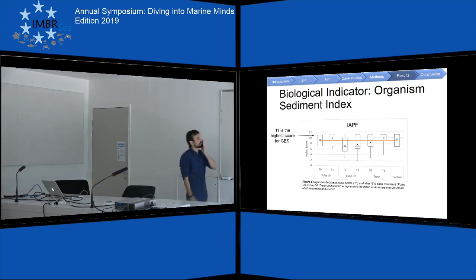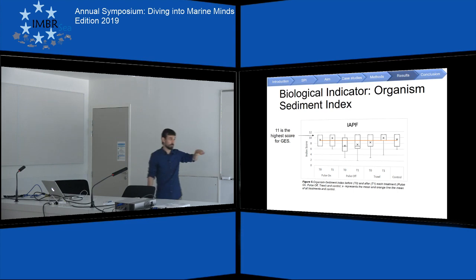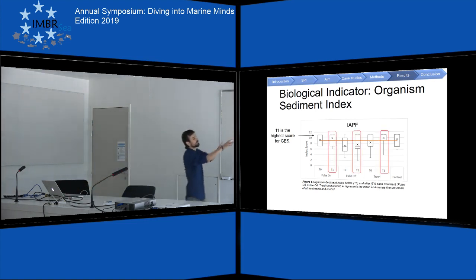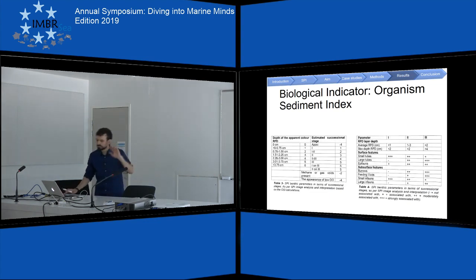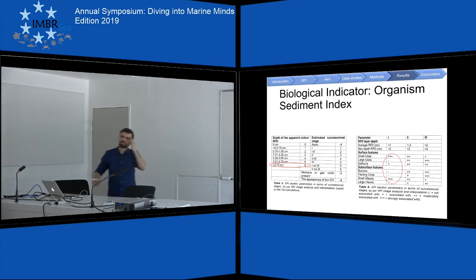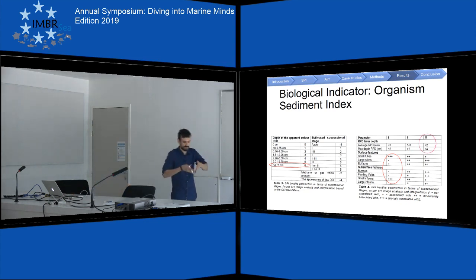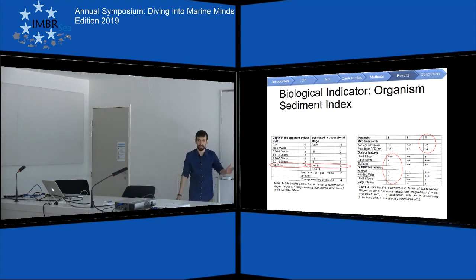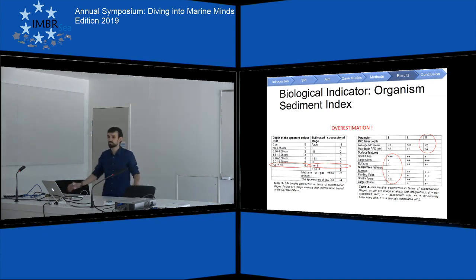For the organism sediment index in fisheries, the highest score according to OZ was 11, and the quartile was always reaching that level across all treatments — I'm just showing one — always at 11. I thought, something is not right here. Going back to the OZ tables, when the RPD layer is at 3.75 centimeters it attributes a score of 6. But all of my pictures didn't show a lot of surface fauna, infaunal structures, or subsurface structures, and most pictures had the RPD deeper than 3 or 4 centimeters. This automatically attributes stage 3, which is 5 points, plus 6 equals 11 — an overestimation. So OZ was not working here.